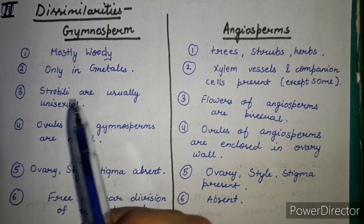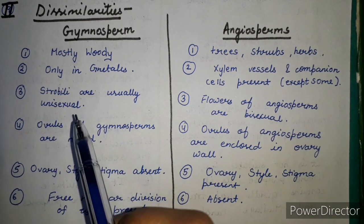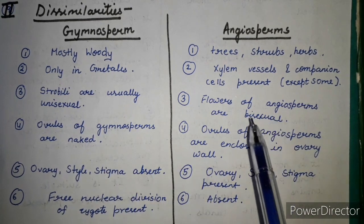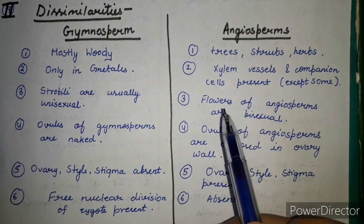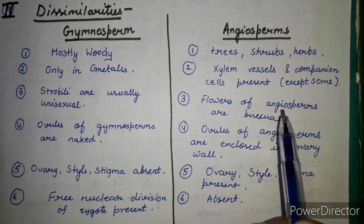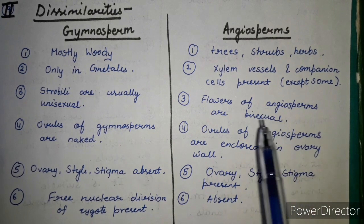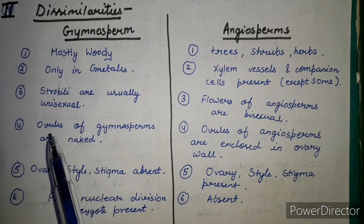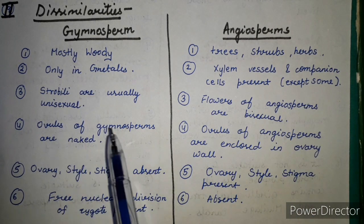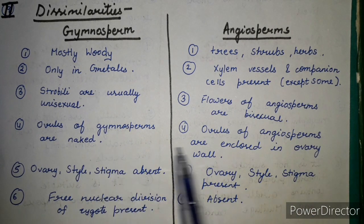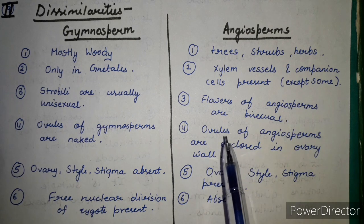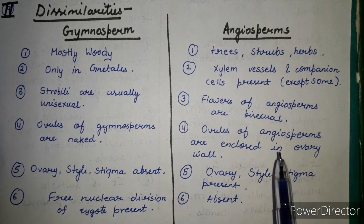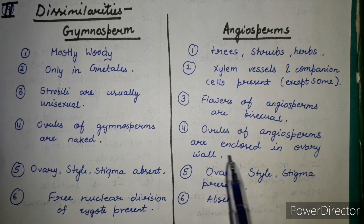Strobilus in gymnosperms is usually unisexual with few exceptions, whereas in angiosperms flowers are bisexual. In gymnosperms, ovules are naked, whereas in angiosperms, ovules are enclosed in the ovary wall.